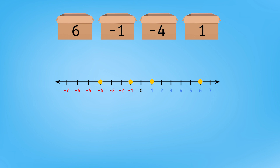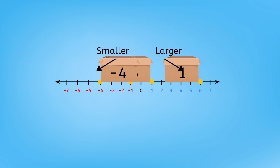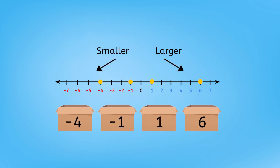Can we order these numbers from smallest to largest? On a number line, smaller numbers are always on the left side, and larger numbers are always on the right side. So we list the numbers in this order, from smallest to largest: negative four, negative one, positive one, and positive six.